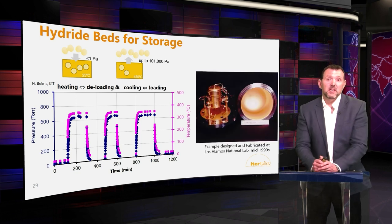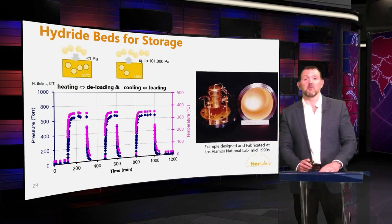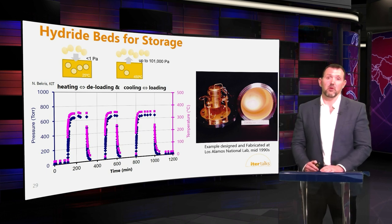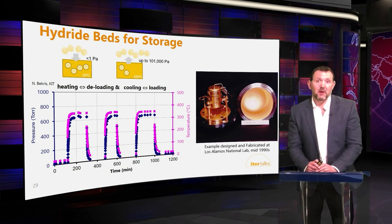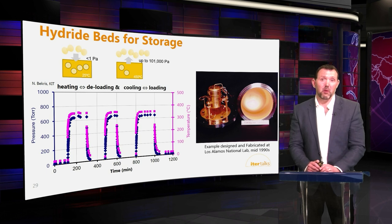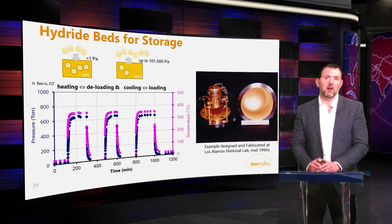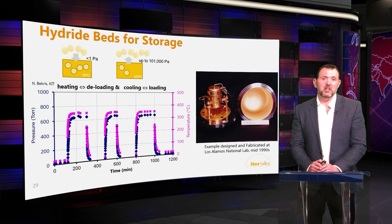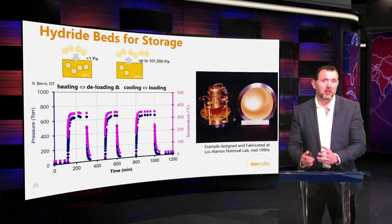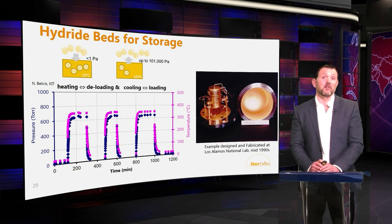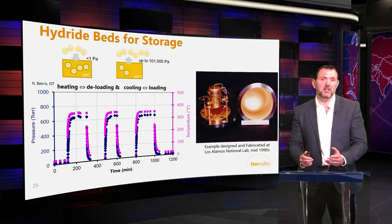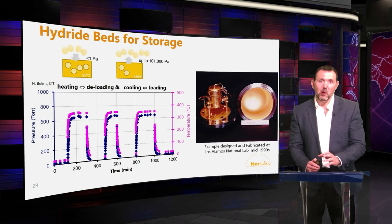An example of what one of these hydride beds looks like is a bed designed and built at Los Alamos National Laboratory in the 1990s. This one is actually gold-plated — the gold plate was used to ensure a good ability to measure the decay and accurately measure the tritium content on the bed. For the ITER tritium plant we don't need to use this functionality, so we're not gold-plating our systems.